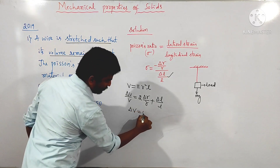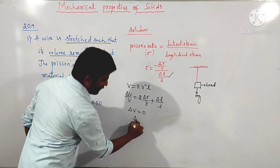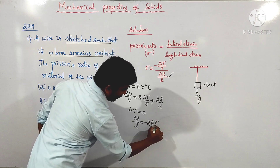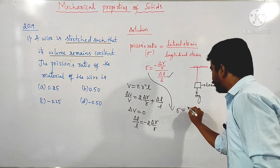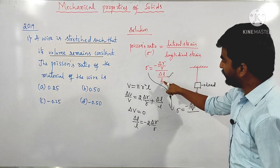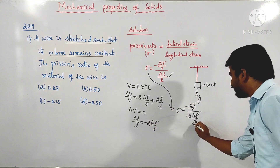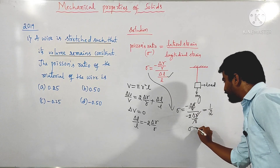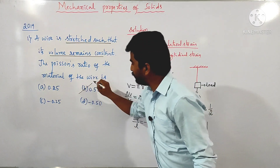When the wire is stretched and the volume remains constant, the change in volume is equal to zero. So the equation becomes: delta l divided by l is equal to minus 2 times delta r divided by r. Substituting into the Poisson's ratio formula, sigma equals minus delta r divided by r, divided by minus 2 times delta r divided by r. These cancel, giving 1 divided by 2. So sigma is equal to 0.5 — the answer for the question is 0.5.